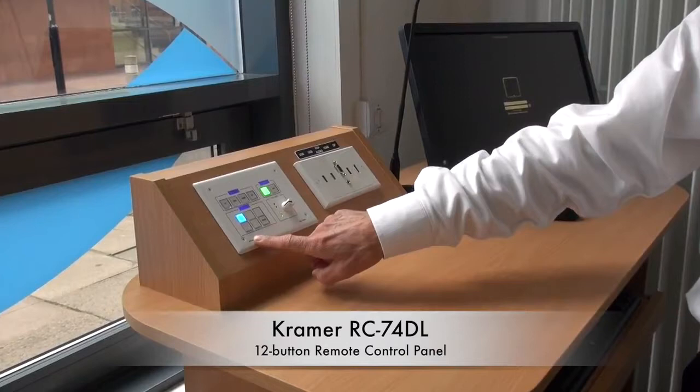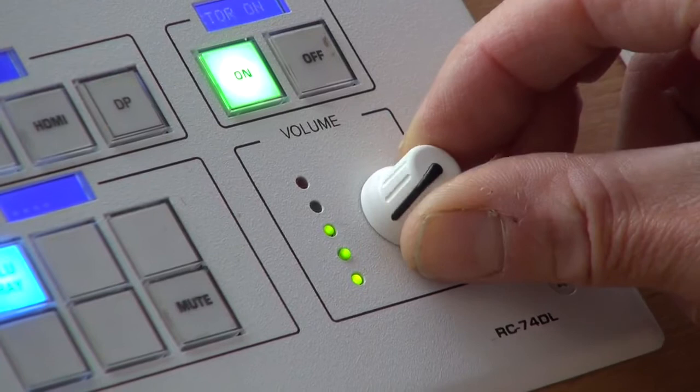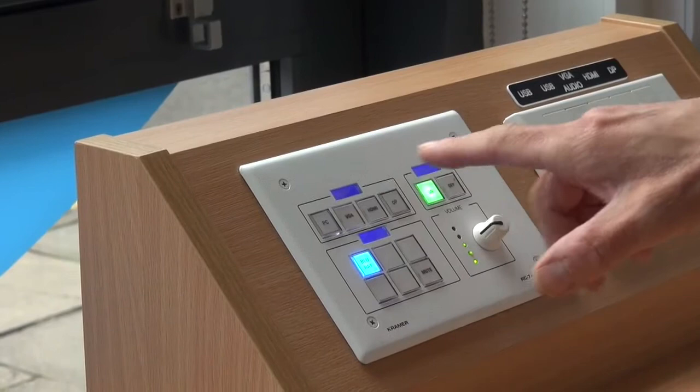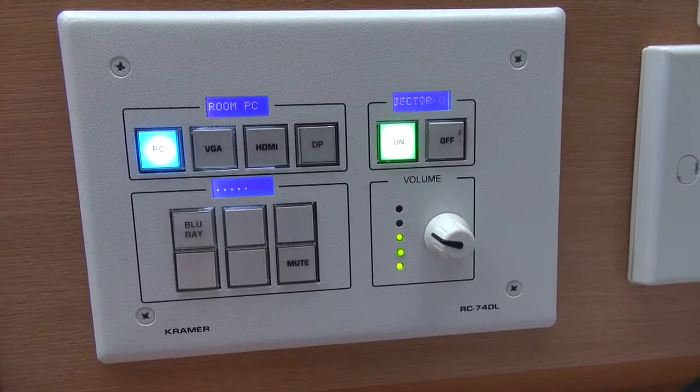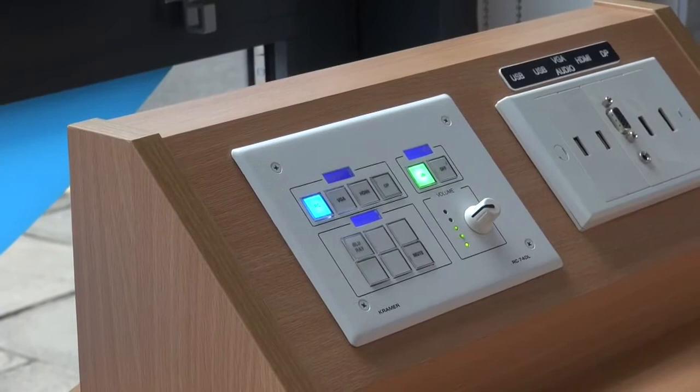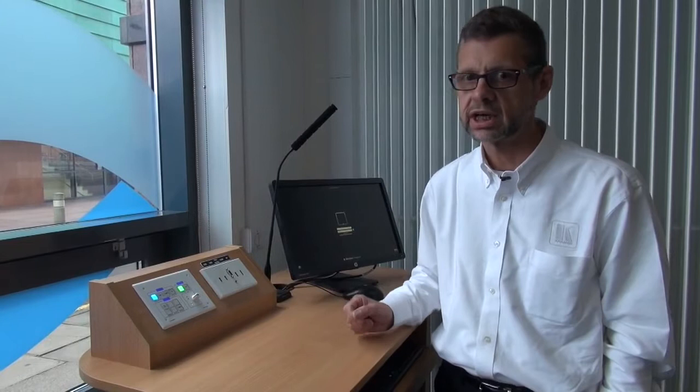We have the RC74DL control panel, a 12 button control panel with rotary volume control. It features LCD feedback panels where if I press a button it gives feedback about what is actually being shown on the display. This makes it easy for lecturers to use a standardized control system across the university, based either around the 12 button panel or in some rooms a six button control panel.